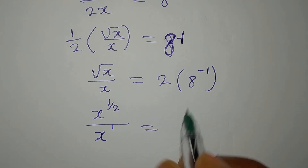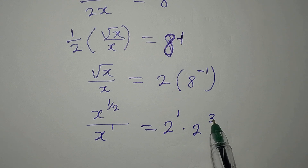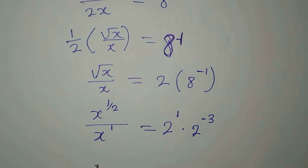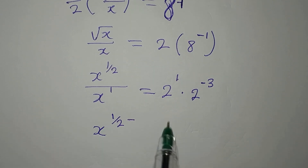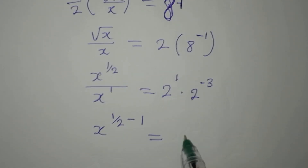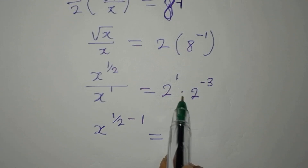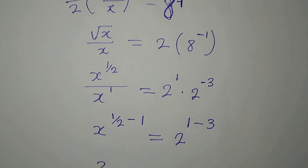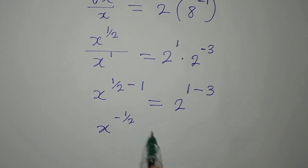On the right side, 2 to the power of 1 multiplied by 8, which is 2 to the power of 3, with the exponent negative 1 gives 2 to the power of negative 3. Since we are dividing on the left, we subtract the exponents: 1 over 2 minus 1 equals negative 1 over 2. And on the right, 1 plus negative 3 equals negative 2.